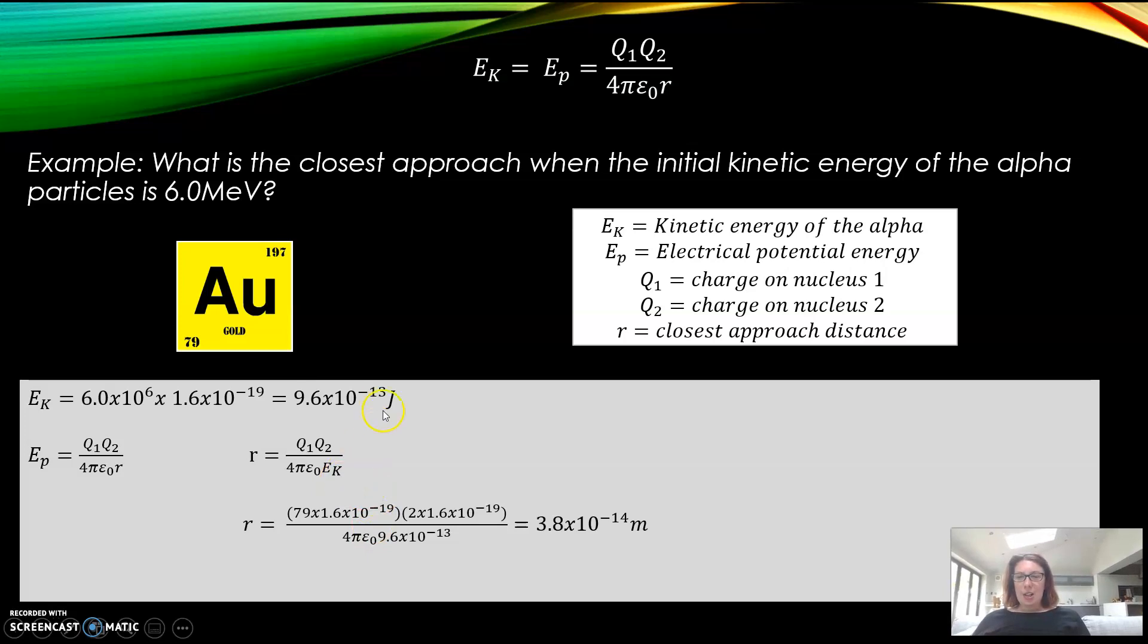Then I need to substitute in the energy which I calculated here, substitute in, rearrange, I get 3.8 times 10 to the minus 14. So that gives me a really good idea of the size of a nucleus - the closest approach method.